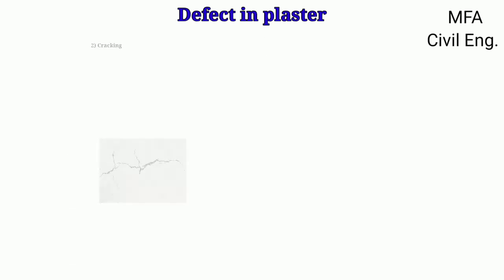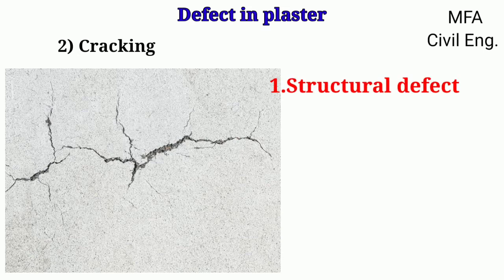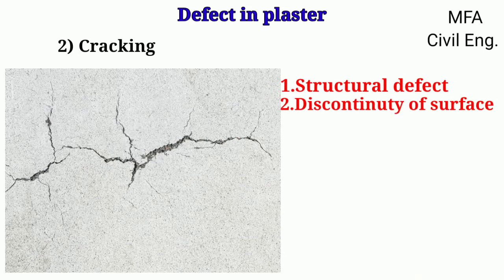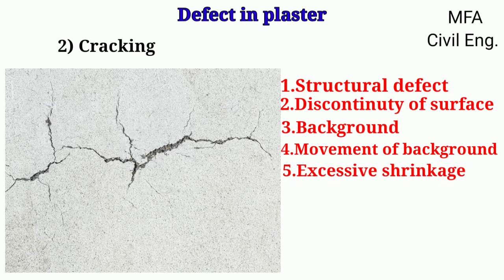Cracking consists of the formation of a crack in the plaster work resulting from various reasons, like structural defects in the building, discontinuity of the surface, background not being proper, movement in the background, rapid drying, thermal expansion, excessive shrinkage, and faulty workmanship.